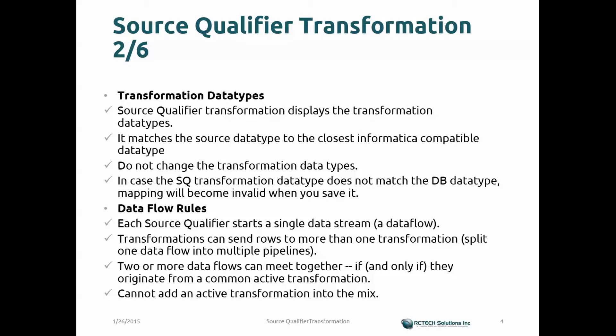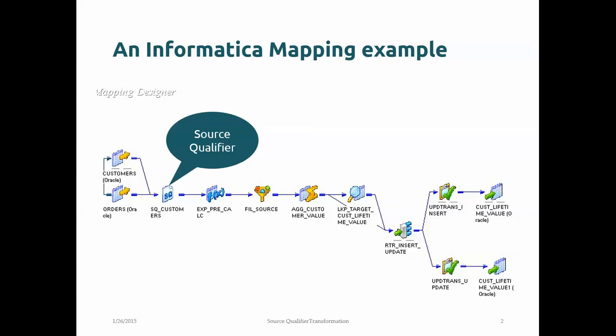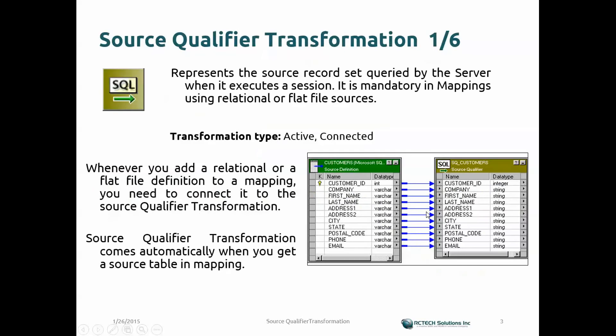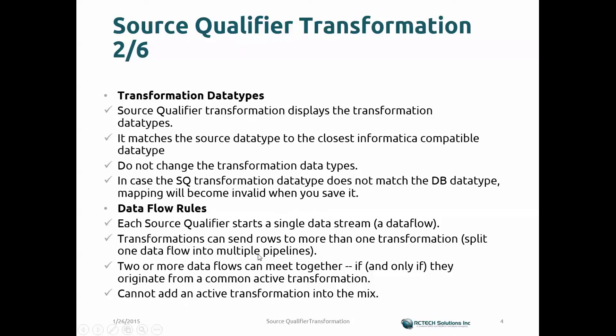Each Source Qualifier starts with a single data stream coming from the source, and from the Source Qualifier you can channelize to multiple targets or multiple transformations. Looking at the Informatica mapping diagram, the data flow goes into one single transformation in our scenario, but after the router transformation it channelizes records into multiple data flows. Similarly, the Source Qualifier can send data to more than one transformation, splitting one data flow into multiple pipelines.